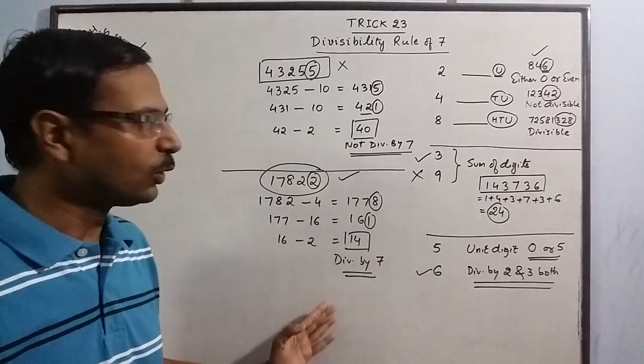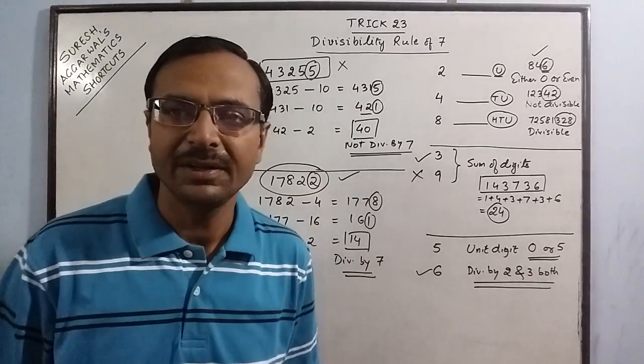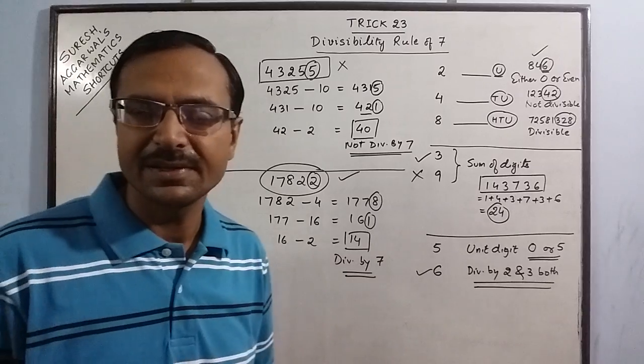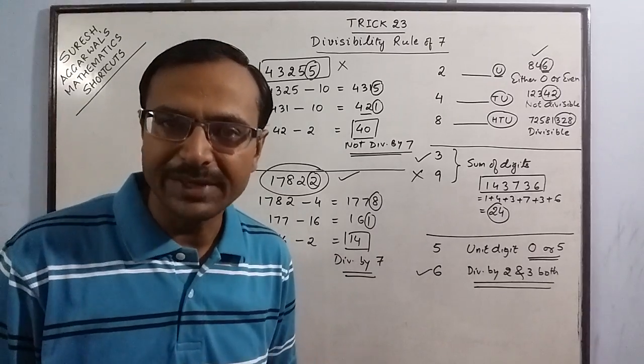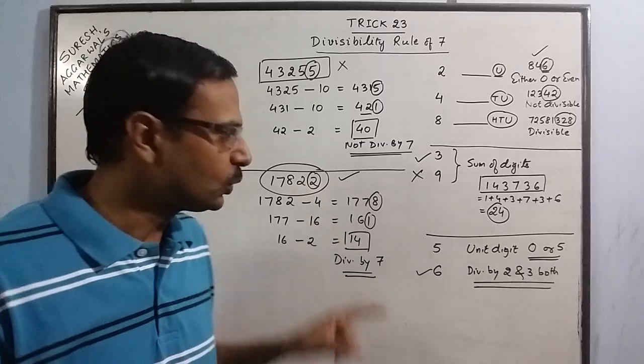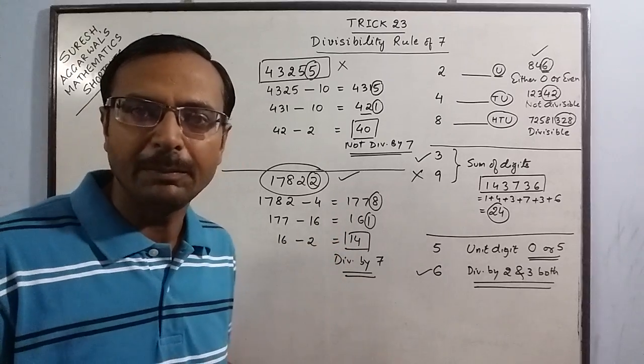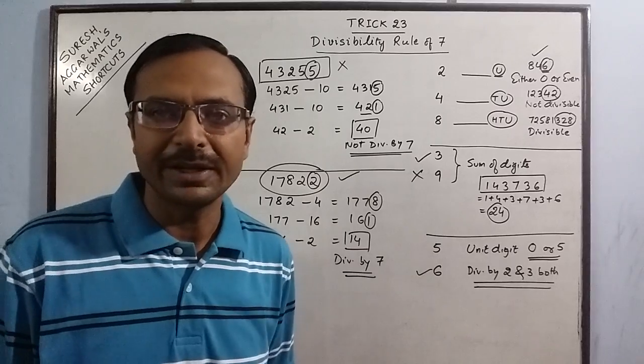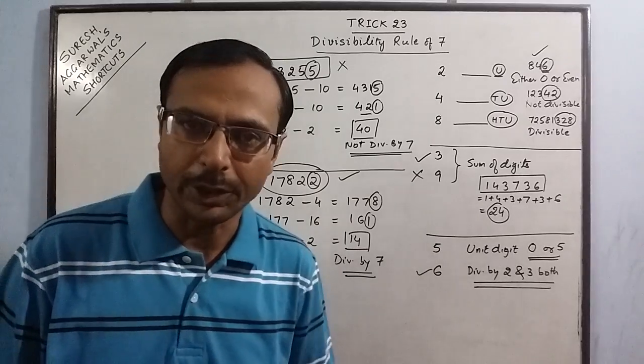So this is the rule for divisibility by 7. When I am illustrating the steps I am taking 20 seconds, but when you solve this in competitive exams you don't have to write the steps. You can do these calculations mentally by looking at the question paper itself and arrive at the result whether the number is divisible by 7 or not.